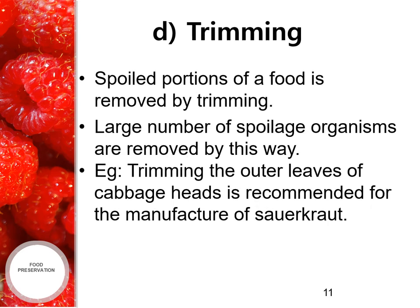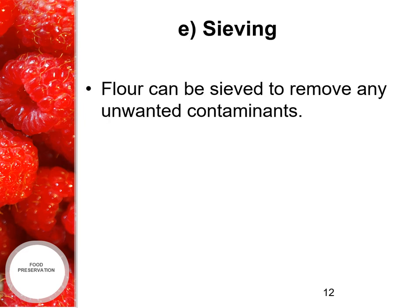The fourth method is trimming. Spoiled portions of a food are removed by trimming, and a large number of spoilage organisms are removed in this way. For example, trimming outer leaves of cabbage heads is recommended for the manufacture of sauerkraut. The last method in removal of microorganisms is sieving, which can be done using a sieve — for example, flour can be sieved to remove any unwanted contaminants.